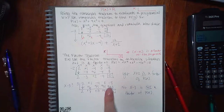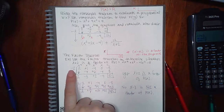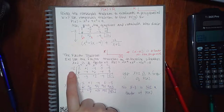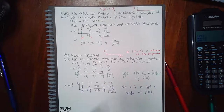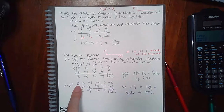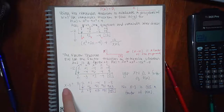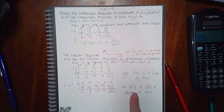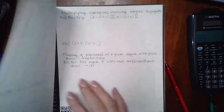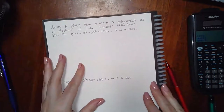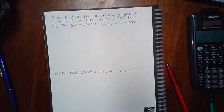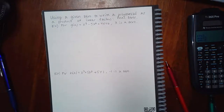So only if you get a remainder of 0 can you say that x minus that value is a factor. If you use a number and don't get 0, then x minus that number is not a factor. The next topic is: use a given zero to write a polynomial as a product of linear factors — essentially, factor it completely.